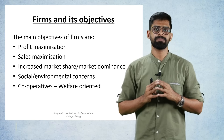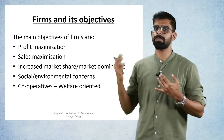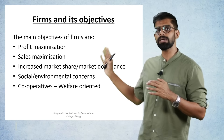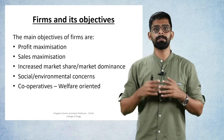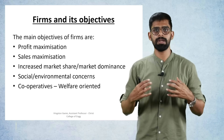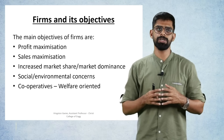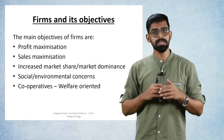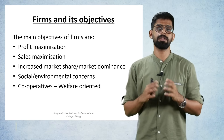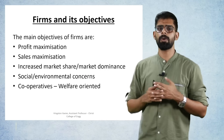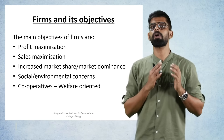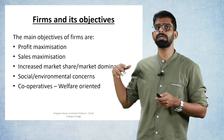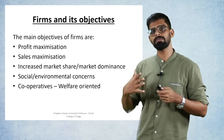What are the objectives of a firm? The first objective is profit maximization. The second is sales maximization. Third is increased market share or market dominance — some companies aim to become a monopoly and dominate the market. Fourth is social and environmental concern — some companies focus on environmental responsibility. Finally, cooperatives are welfare-oriented, focusing on the welfare of members rather than just profit, sales, or market share.